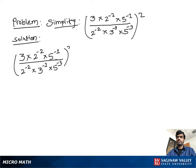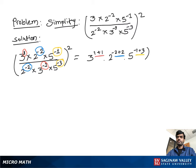First we solve inside the parentheses, then we raise to the second power. Using exponent properties, we subtract the powers: we get 3 to the 1 plus 1 (because 1 minus negative 1 is 1 plus 1), 2 to the negative 2 plus 2 (because negative 2 minus negative 2 is negative 2 plus 2), and 5 to the negative 1 plus 3 (because negative 1 minus negative 3 is negative 1 plus 3), all to the second power.